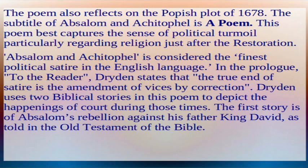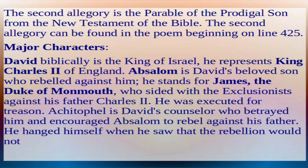Absalom and Achitophel is considered the finest political satire in the English language. In the prologue to the reader, Dryden states that the true end of satire is the amendment of vices by correction. Dryden uses two biblical stories in this poem: the first is Absalom's rebellion against his father King David as told in the Old Testament, and the second allegory is the parable of the prodigal son from the New Testament, found beginning on line 425.